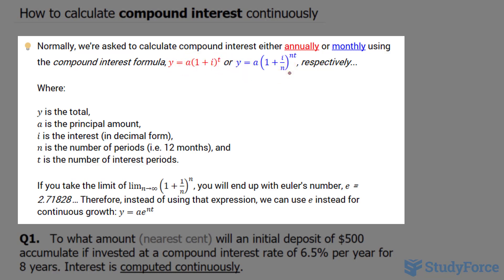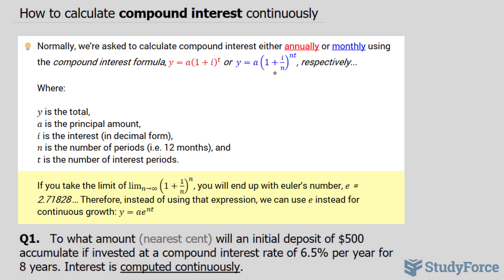If you take the limit specifically of this part of the equation, and you take the limit where n approaches infinity, let's say a very, very large value for n, you'll end up with the number 2.71828, which is referred to as Euler's number.